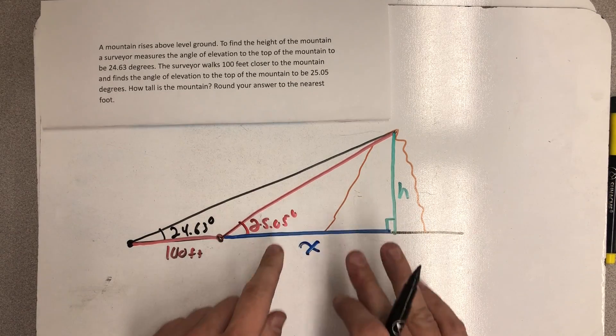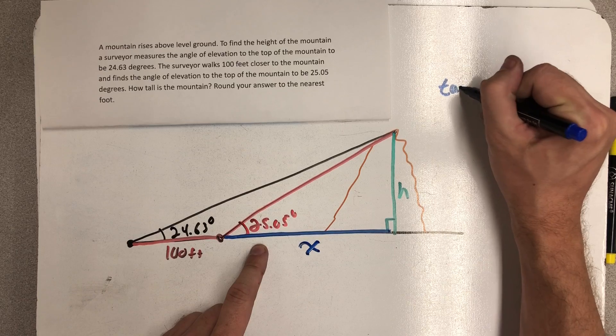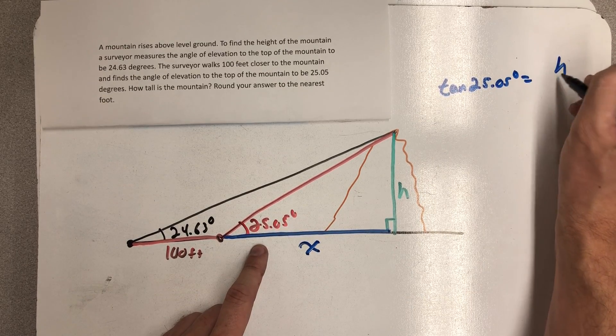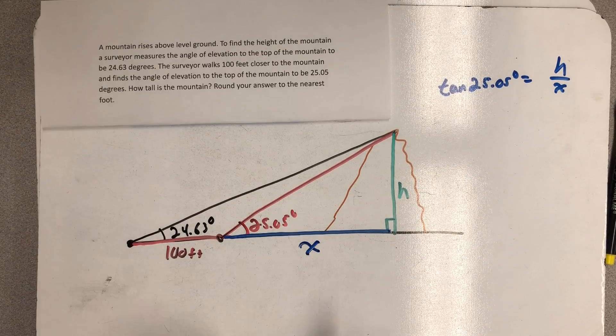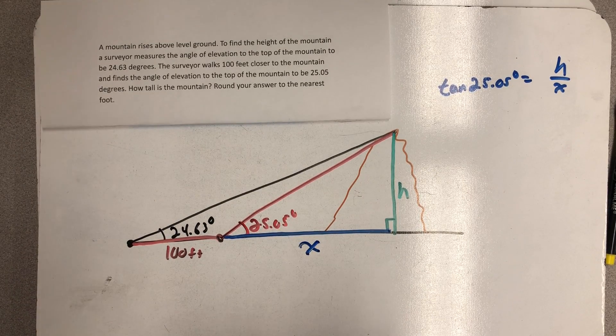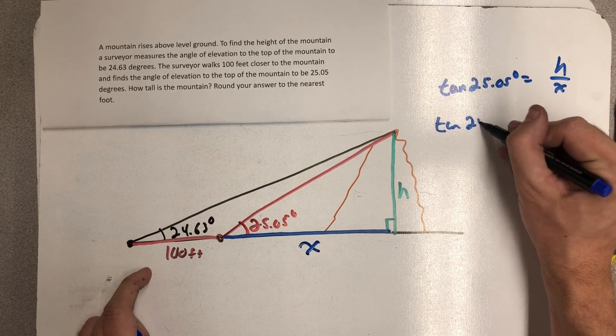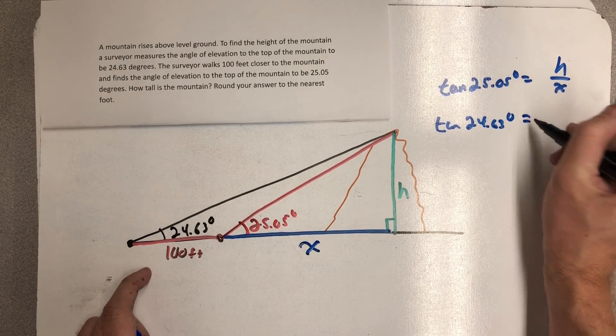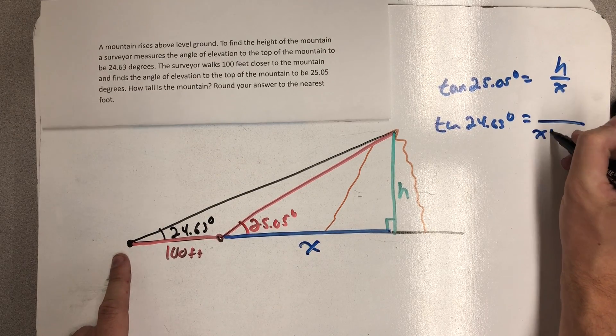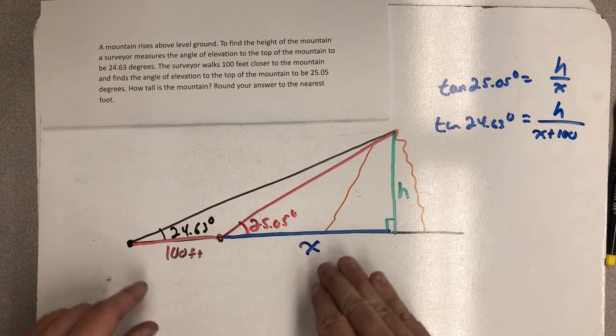And so in this little right triangle, I could think, well, the tangent of 25.05 degrees would be h over x. And I see two variables. If I knew any one of them, I'd be in good shape. And in the big triangle, what I see is the tangent of 24.63 degrees is equal to, well, this whole side on the bottom and still the height on the top because opposite over adjacent.